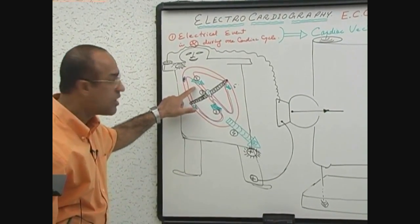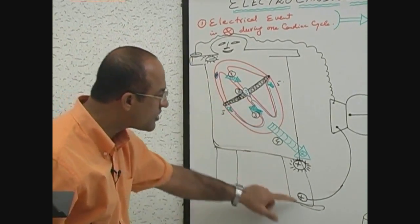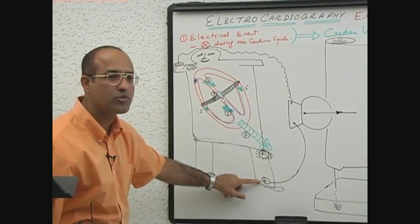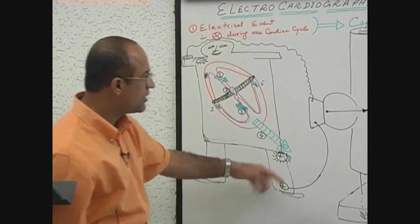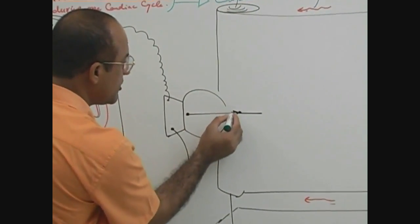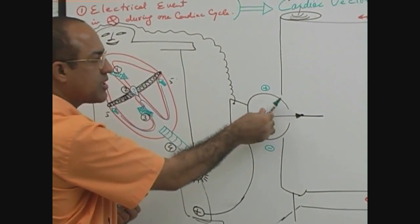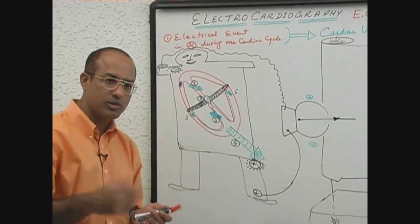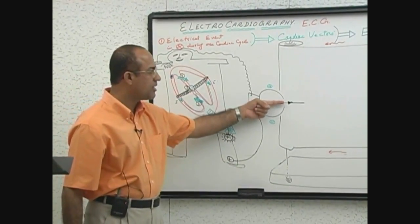The atrial depolarizing vector is moving towards the positive electrode, so the deflection should be positive. When positive charges move toward the positive electrode, deflection will be positive and the needle will move upward. Upward deflections are positive and downward deflections are negative. So when the atria undergo depolarization, a small vector moves toward the positive electrode, producing a small positive deflection.